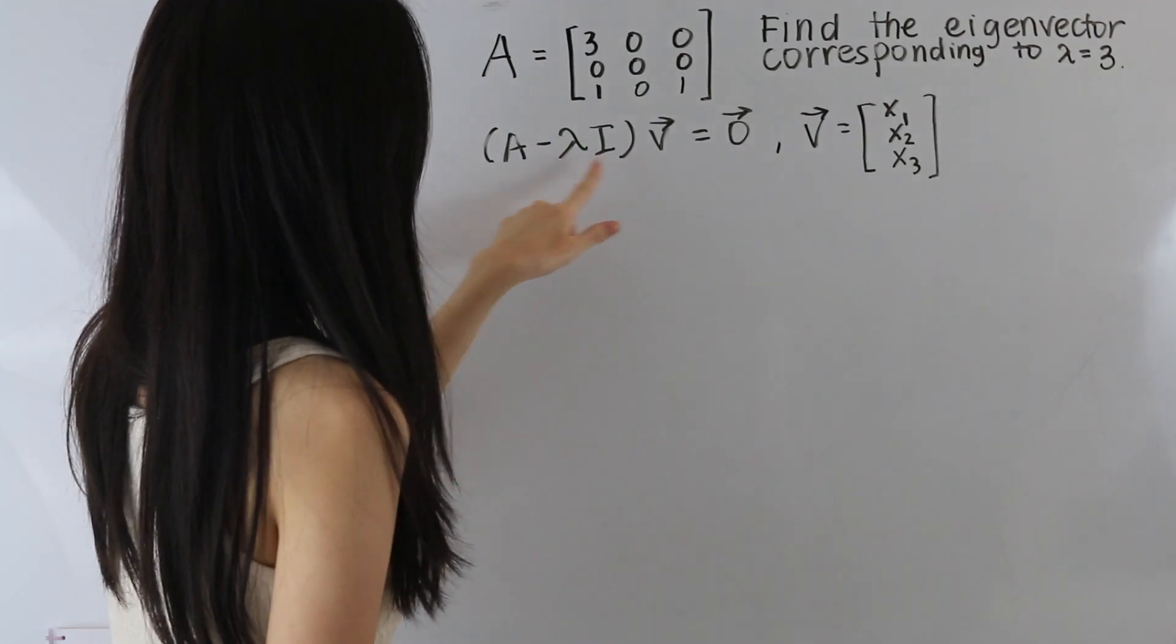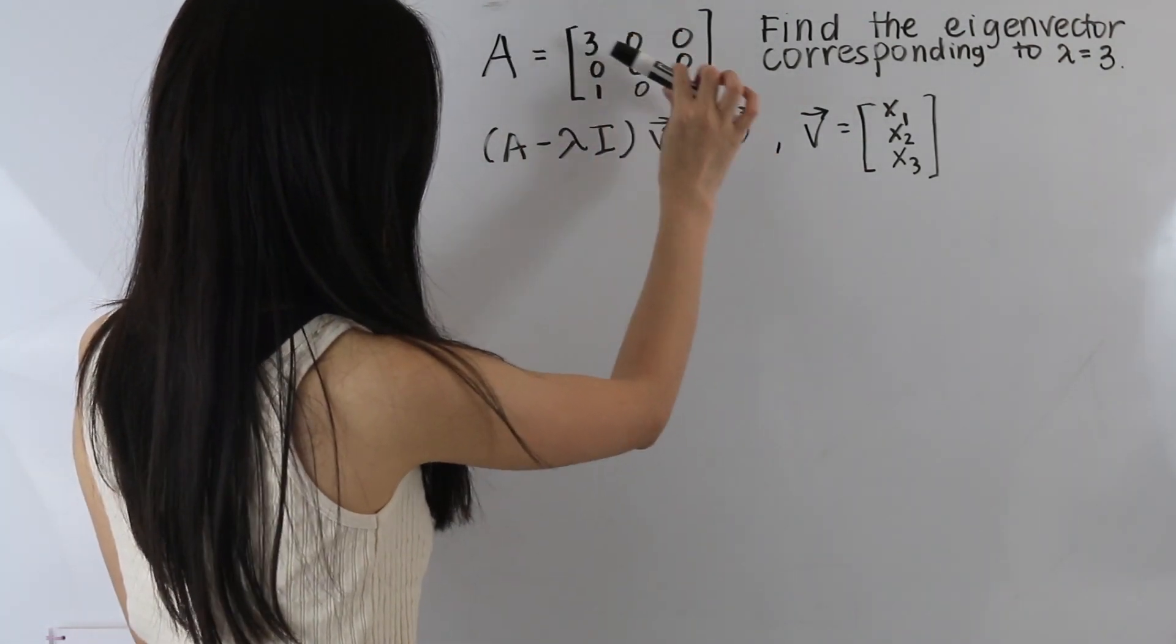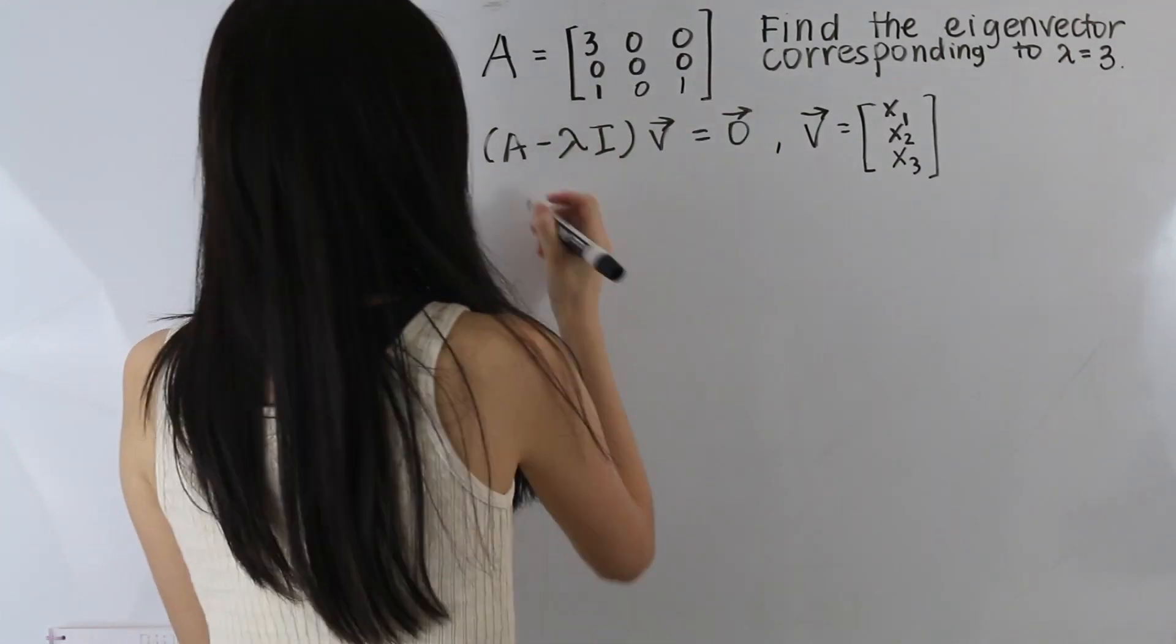And remember, all this means is that we're subtracting the diagonal elements of this matrix by lambda. So let's do that.